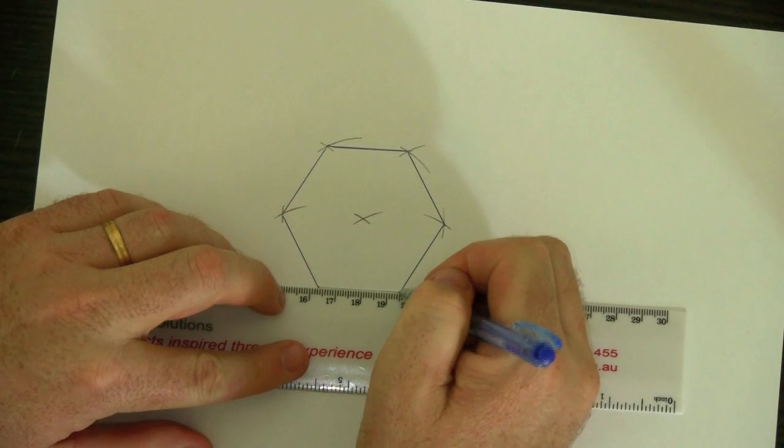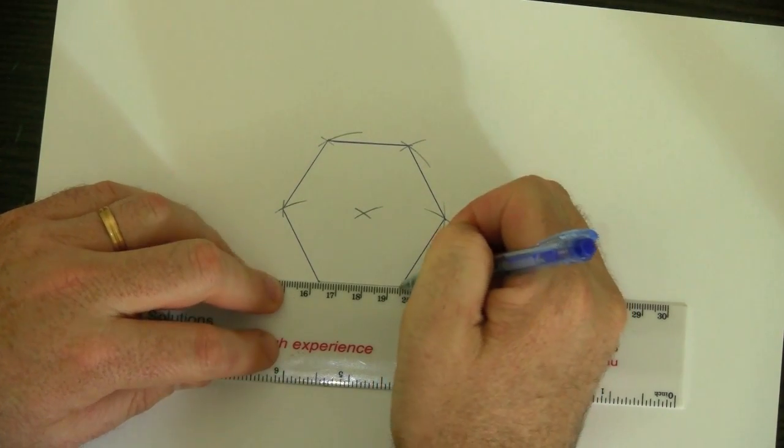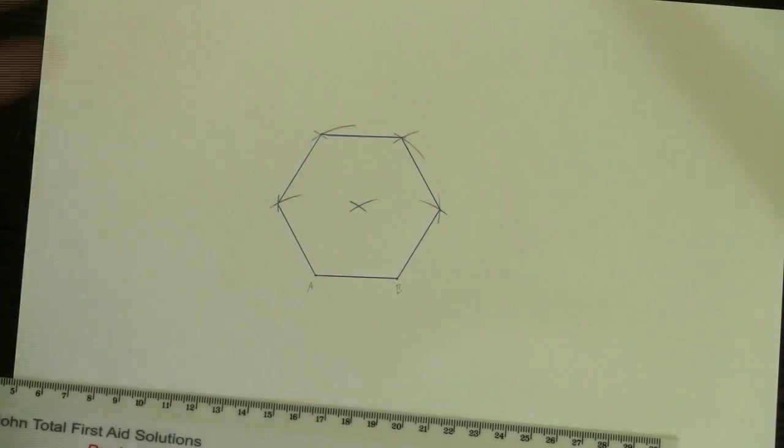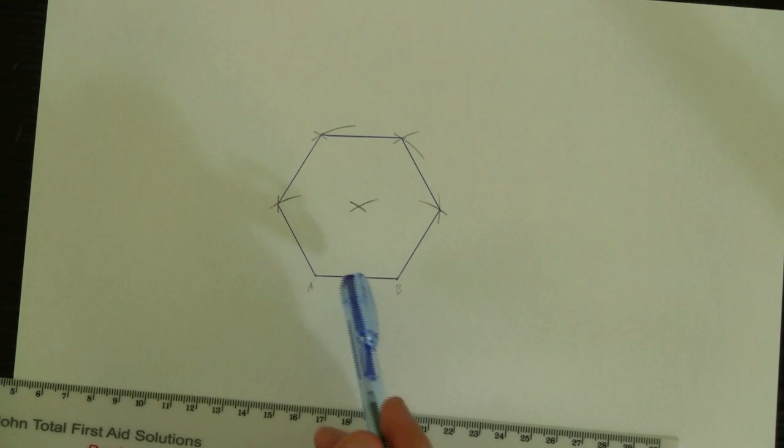The original point arc AB, and there you have it, a regular hexagon sitting on this edge AB.